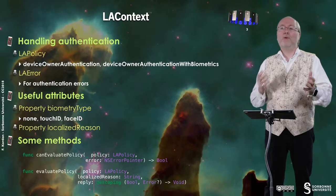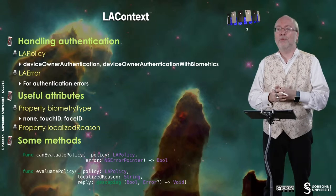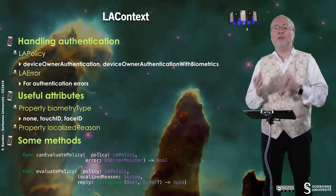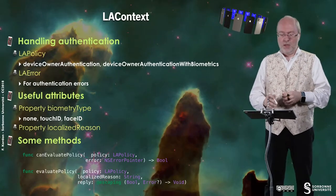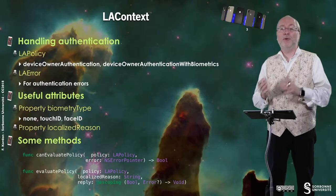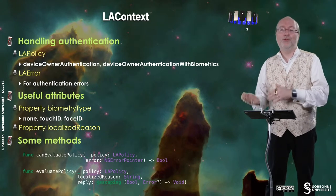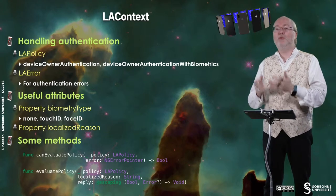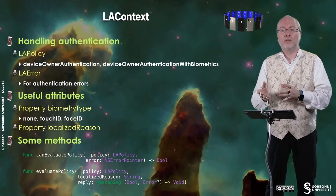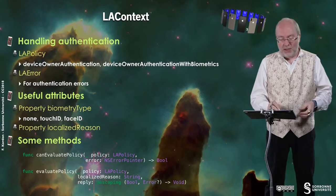You have LAError for authentication errors, and you can get the localized string for the message. There are some useful attributes. The first is the biometryType property — a read-only attribute — and it can have values such as none, Touch ID, or Face ID, which you can check for. You also have a localizedReason property. The two main methods you use are canEvaluatePolicy, which takes a given policy and returns a boolean — true if you can evaluate that policy, for example returning false on a device without a biometric sensor. I advise you to check canEvaluatePolicy before calling evaluatePolicy, otherwise you may end up with crashes.